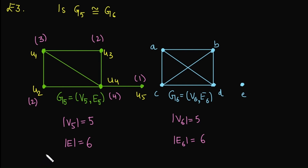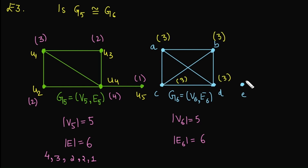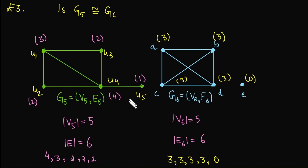The degree sequence for G5 starts with the highest degree 4, then 3, then 2 occurring twice, then 1. Now for graph G6, the degrees of its vertices are 3, 3, 3, 3, and vertex E has degree 0. The degree sequence for G6 is 3, 3, 3, 3, 0. The degree sequences are not the same, meaning we cannot map these vertices. So clearly G5 is not isomorphic to G6 because their degree sequences differ.